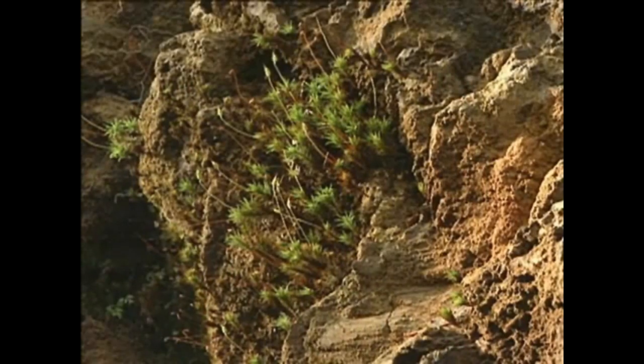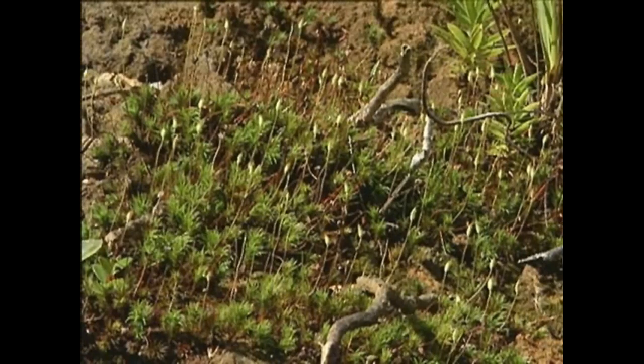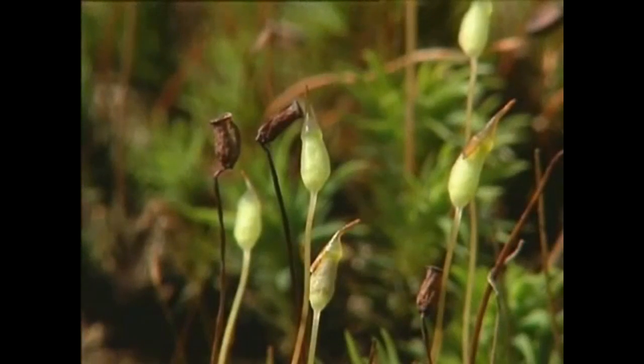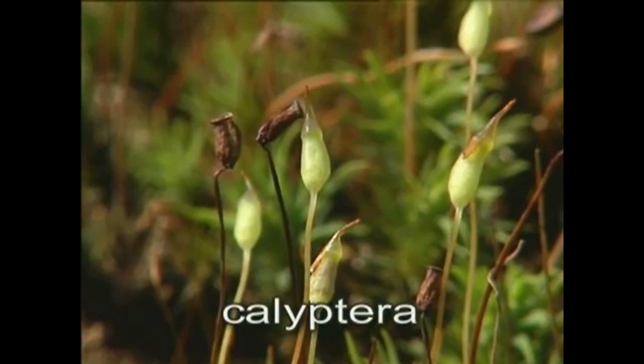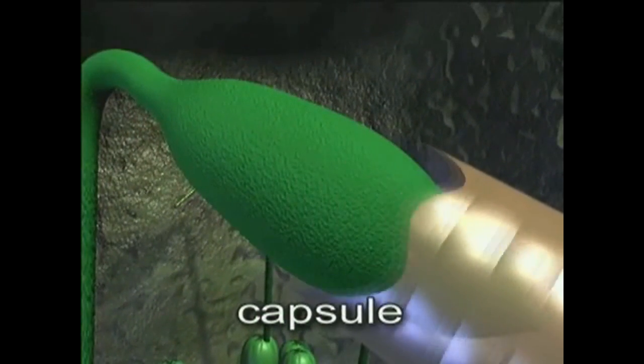These female stems have all been fertilized and support sporophytes above them. The tip of each is covered by the torn venter or calyptra. This soon falls away exposing a capsule or sporangium.